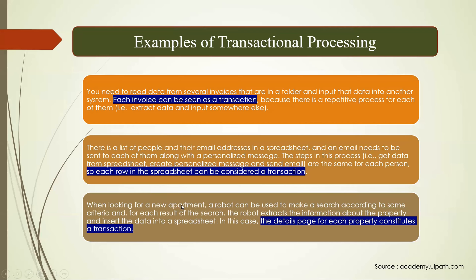Third, when looking for a new apartment, a robot searches according to criteria, extracts property details and puts them in an Excel sheet — the details of each property would be a transaction. So everything that follows the same repeating pattern is a transaction. When building your automation, you first decide whether it is a linear, iterative, or transactional process, and then describe what the transaction will be.